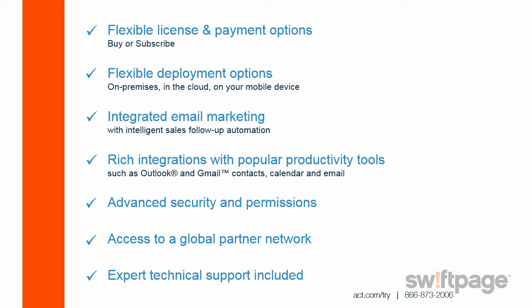ACT comes included with email marketing. Inside ACT email marketing are intelligent lists and follow-up automation. ACT now boasts rich integrations with productivity tools — it can integrate with your Outlook email, and also with contacts and calendar for both Outlook and Gmail. ACT also includes advanced security and permissions, access to the global partner network, and expert technical support.